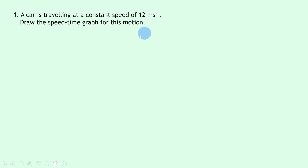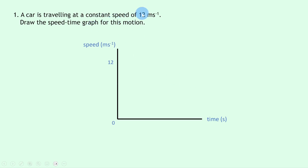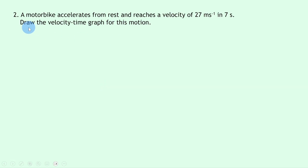Question one says a car is traveling at a constant speed of 12 meters per second — draw the speed-time graph for this motion. Let's start with our axes, labels, and units: speed in meters per second on the y-axis and time in seconds on the x-axis. We put zero at the origin and 12 meters per second on the y-axis. Remember, if an object is traveling at a constant speed we have a straight horizontal line on the speed-time graph, so it looks something like this.